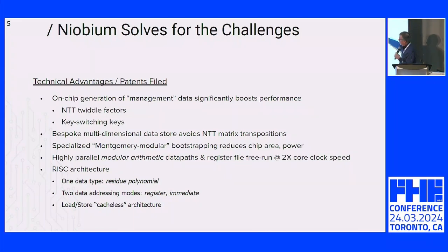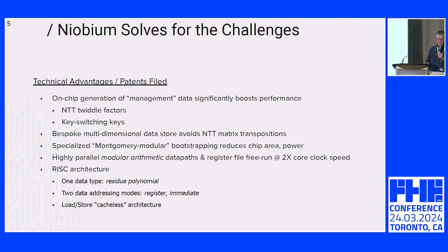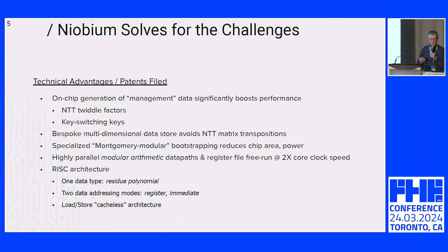We've also gone a long way toward making NTTs more efficient. Typically you do one part of the NTT, transpose the matrix in memory, then do the other part. We have custom on-chip memory designs aimed at doing two-dimensional access with no delay and no need for transposition — combining a clever static RAM design with reuse of the automorphism shifters — so transposition is free, done on the fly.